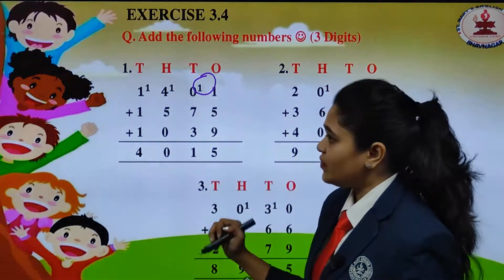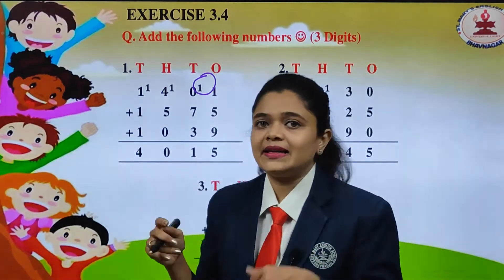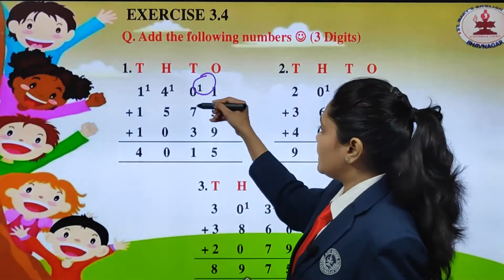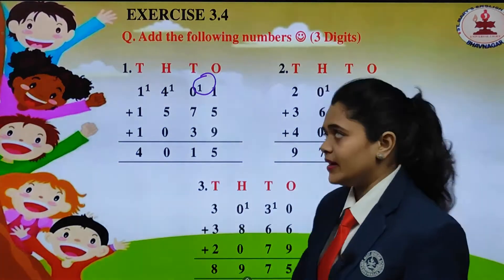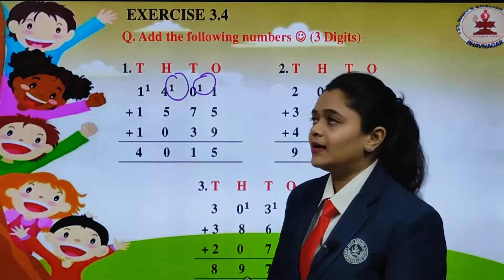The carry number which we have over here, what we will do with it? We will add in which column? We will add in the tens column. So 1 plus 7 will get 8. 8 plus 3 will get 11. Again one carry and one will put it down.